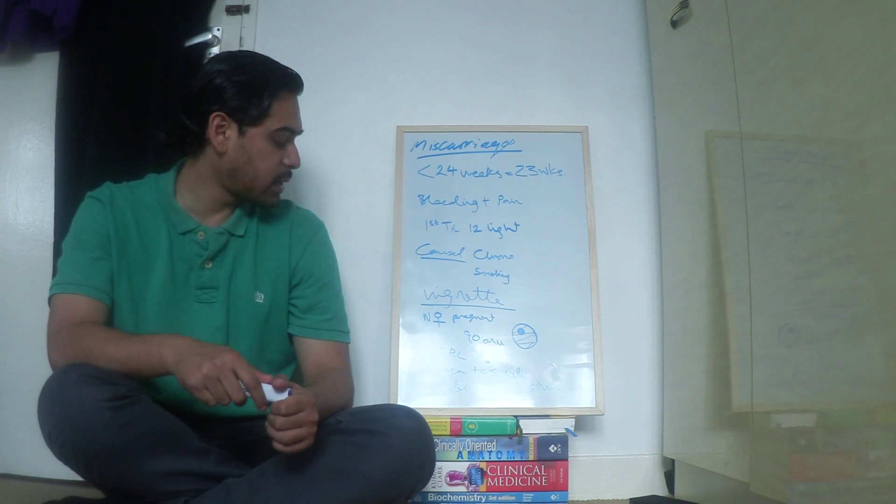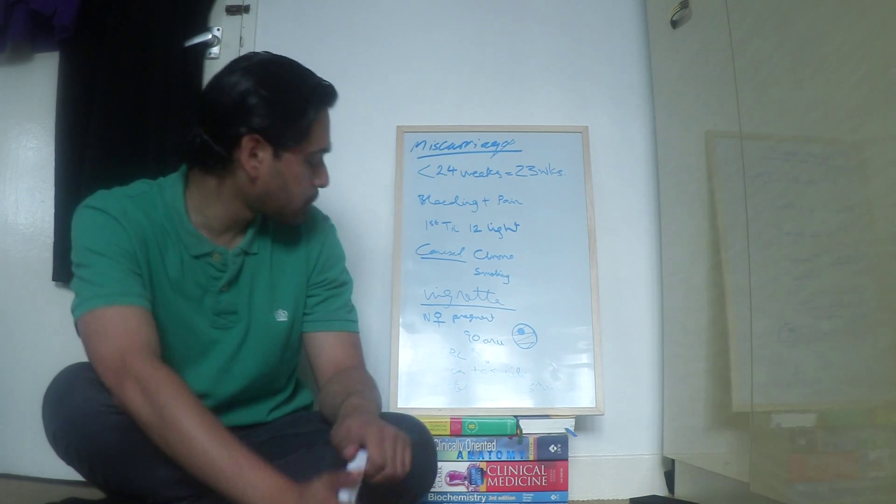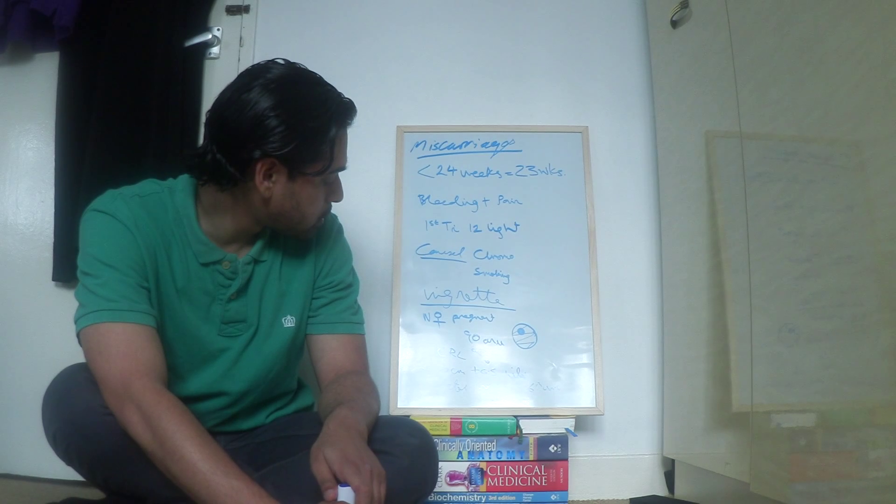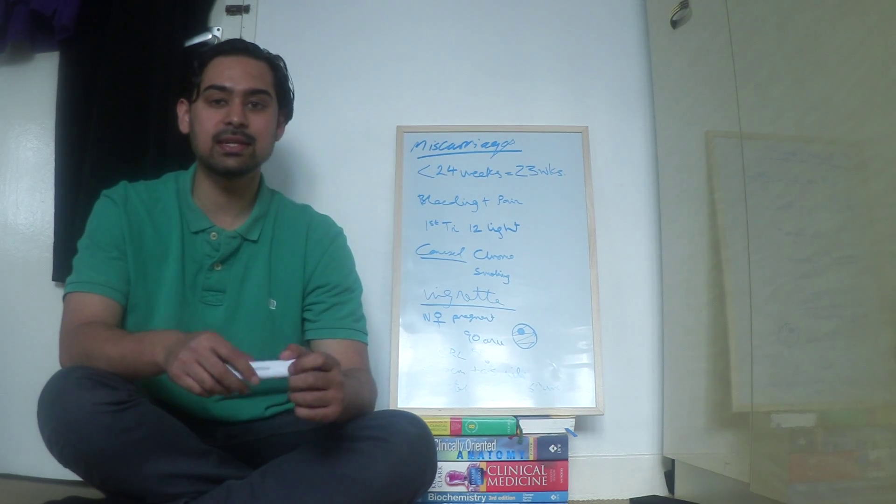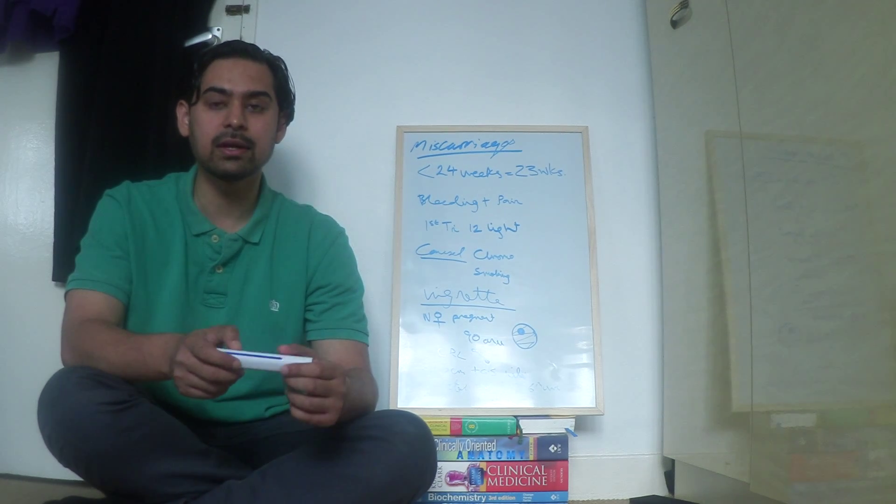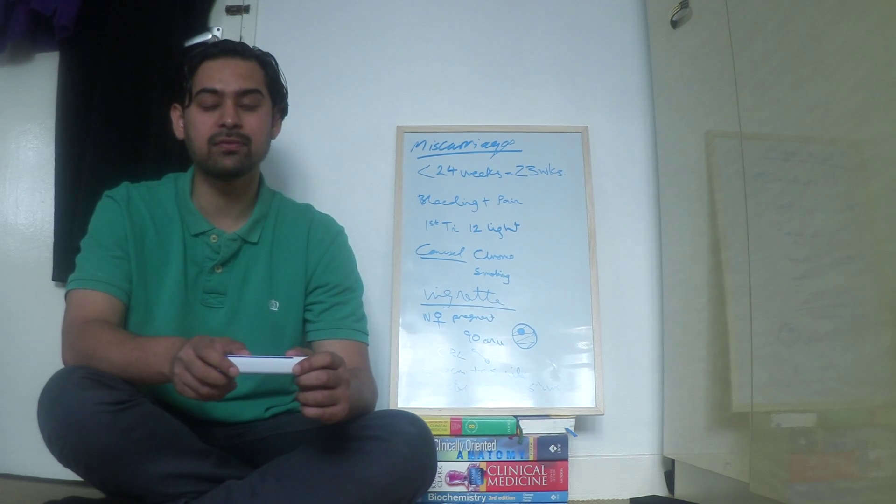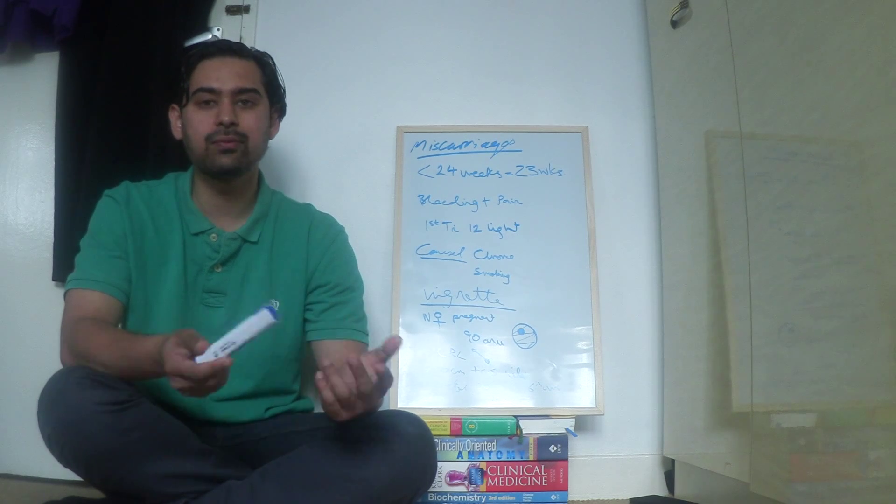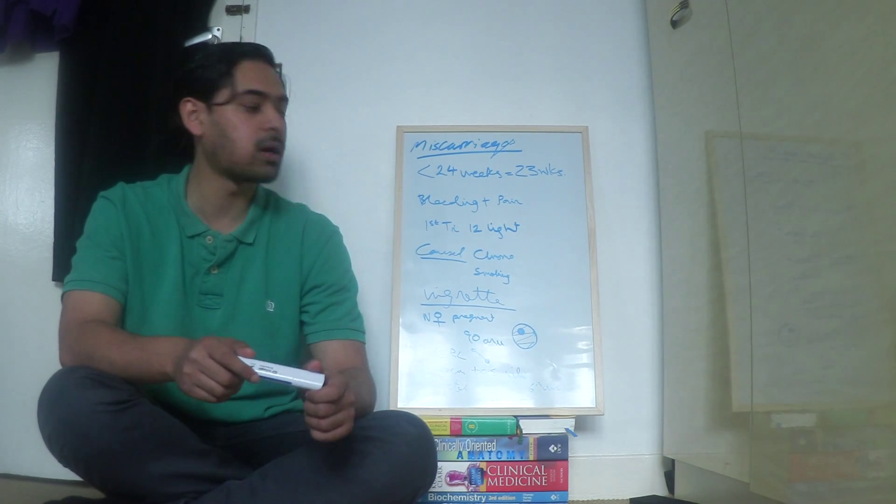And then you also have fetal heart rate. So the NHS says you can detect the fetal heart rate at 6 weeks. In other places on the internet I found you can detect the fetal heart rate at about end of 5th week. So end of 5th week, 6th week, that's when you will detect the fetal heart rate.